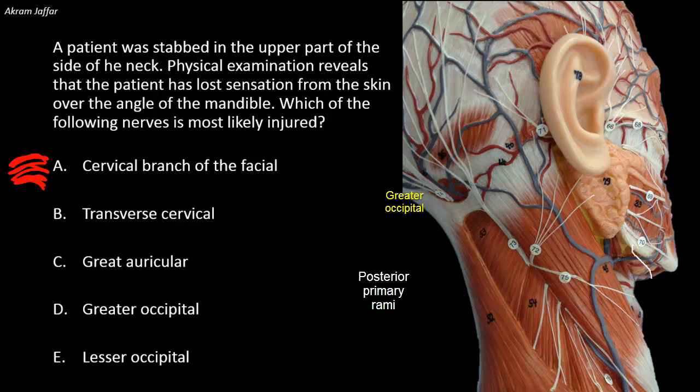The great occipital nerve, option D, is a posterior primary ramus and supplies the back of the scalp. The rest of the skin of the neck is supplied by anterior primary rami of C2, C3, and C4 from the cervical plexus. C1 has no cutaneous branches, and from C5 downwards, the dermatomes are projected to the upper limb and constitute the brachial plexus.